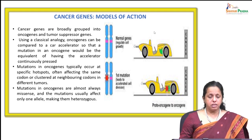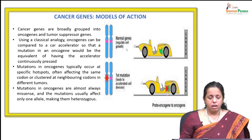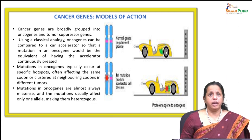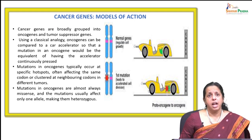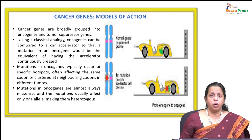Where normal genes regulate cell growth and there is no mutation, there will be no drive towards cancer progression. Whereas if there is a single mutation, it leads to accelerated cell division. As a result, the proto-oncogene is converted to an oncogene and this leads to the initiation of cancers.